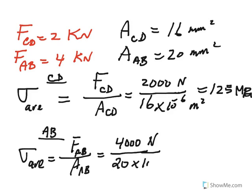Again, millimeters squared converted to meters squared. The factor is 10 to the negative 6. So this time we get 4,000 divided by 20. That is 200. And remember, the unit should be mega Pascal.